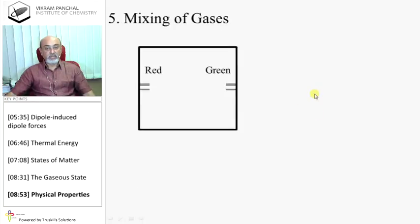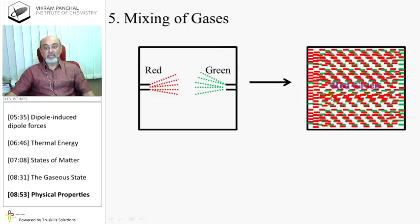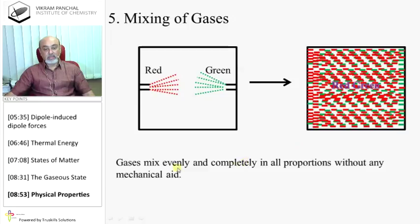Mixing of Gas. If you spray two different colored gases in one closed container, after some time you will find uniform distribution of gas. So gases mix evenly and completely in all proportions without any mechanical issue.